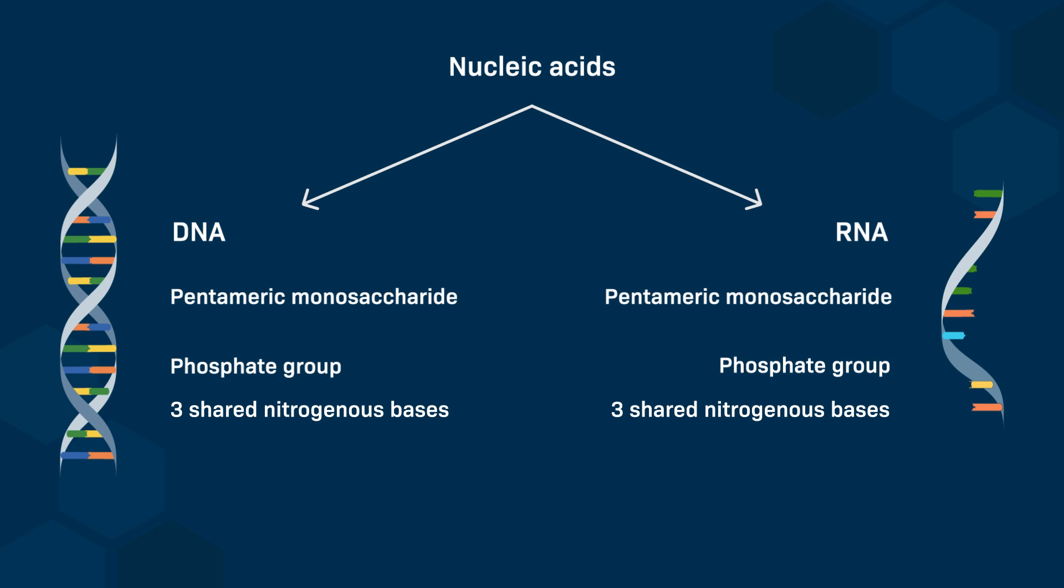However, there are two important differences in the chemical structure of DNA and RNA. The pentameric monosaccharide in DNA is deoxyribose, and the pentameric monosaccharide in RNA is ribose. In DNA and RNA, the fourth nitrogenous base is also different. DNA contains thymine, whereas RNA contains uracil.